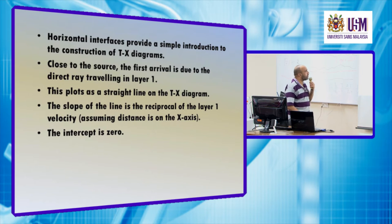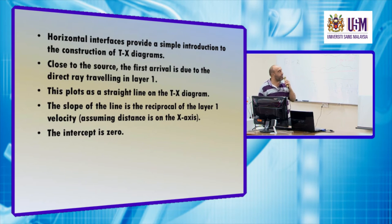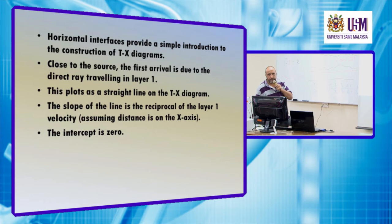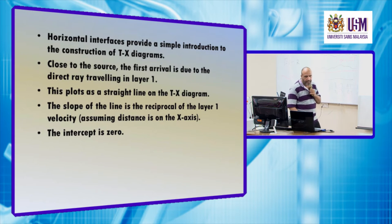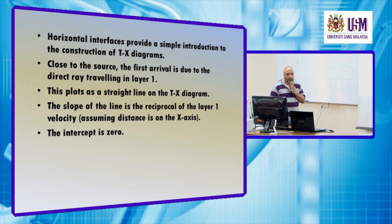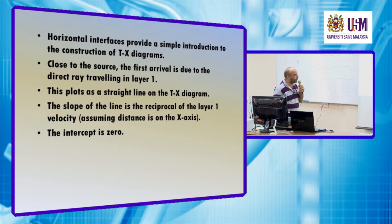At the TX graph, close to the source, the first arrival is due to the direct wave traveling in layer 1 — the weathering layer or the surficial layer. This plot has a straight line on the TX diagram.